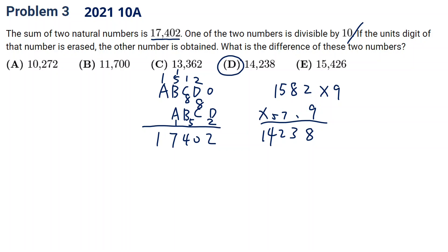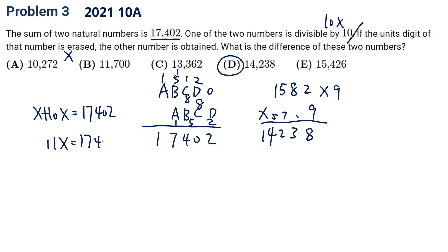Another way you can do is, you can assume the small number is X. And the big number is 10 times X, so 10X. Then X plus 10X, the sum will be 17402. So 11X is 17402. X will be 1582. Same answer. And then you will get the answer. This is an interesting question.